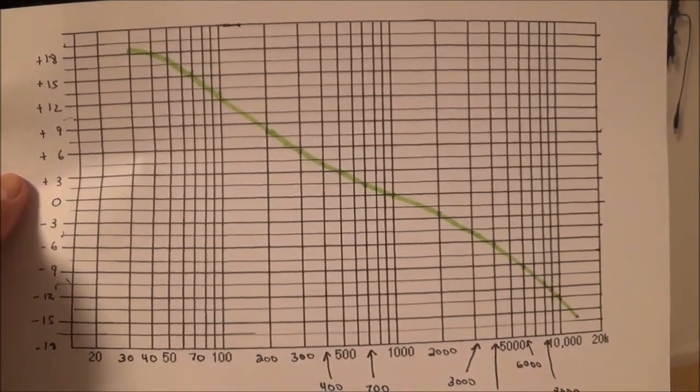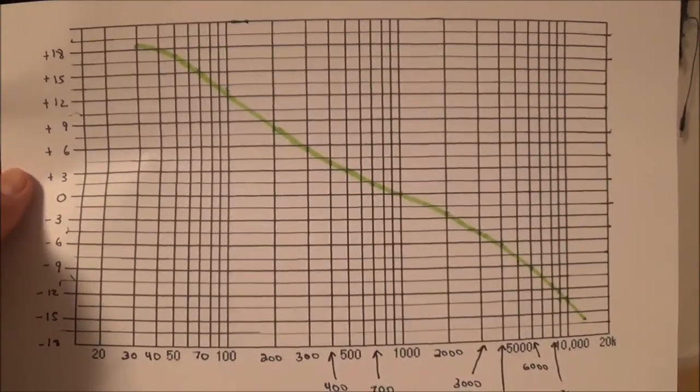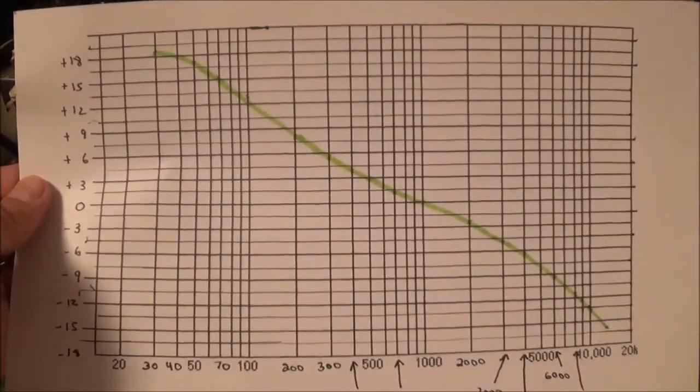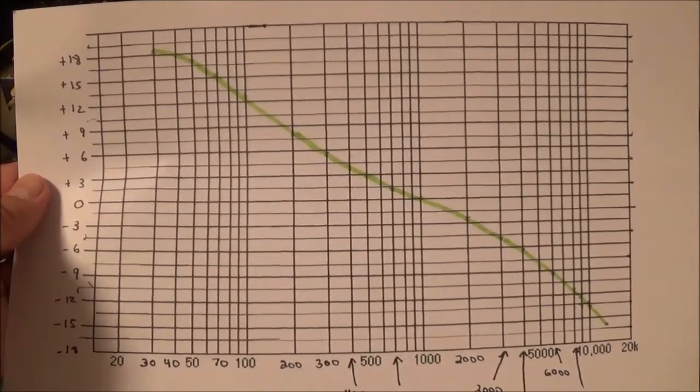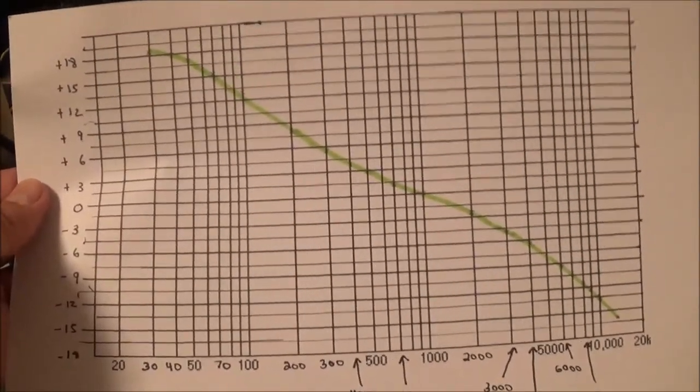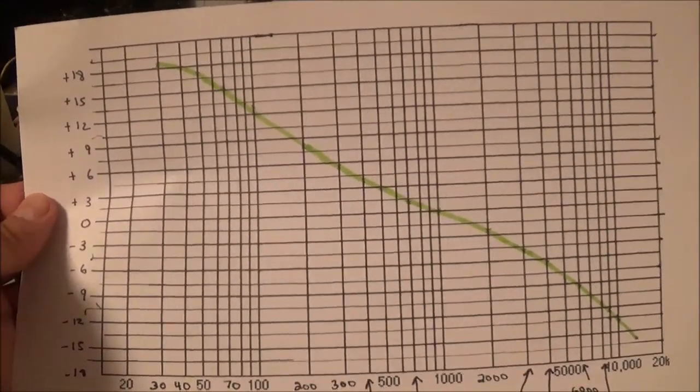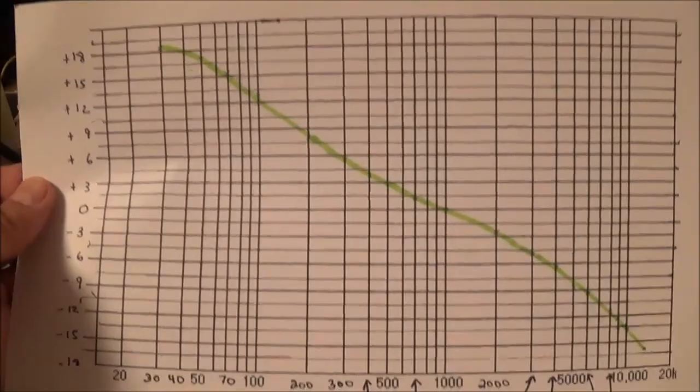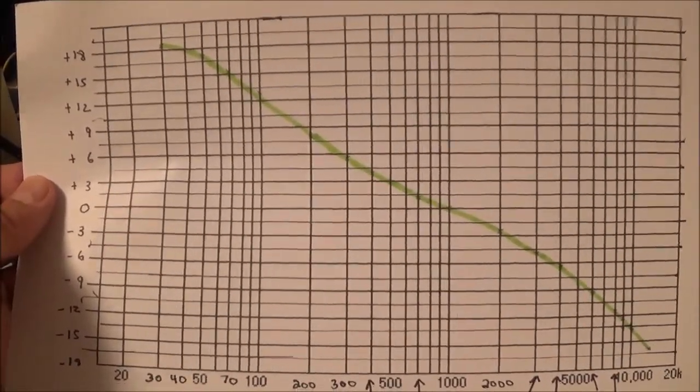So before I continue on, I have to mention that I'm doing this for one channel. You'd actually have to do this for both channels, so either you'd have to make two plots like this or you'd have to use just different color markers. So I think that talks about it, so let me go ahead and start.